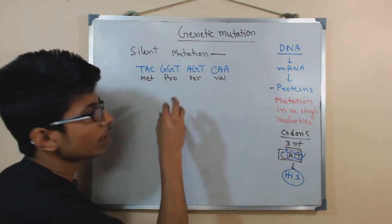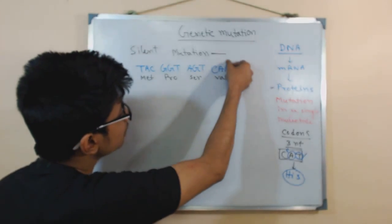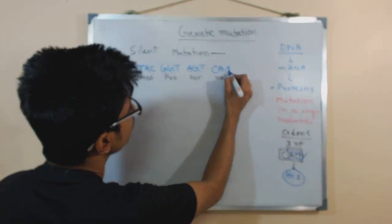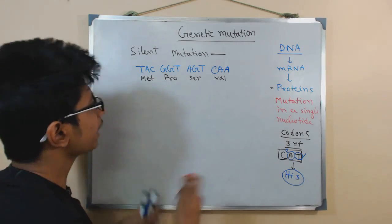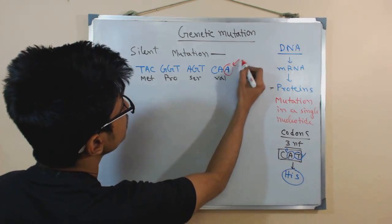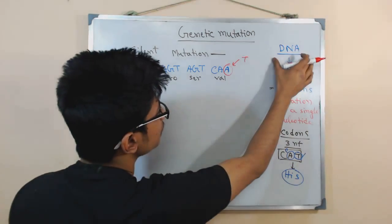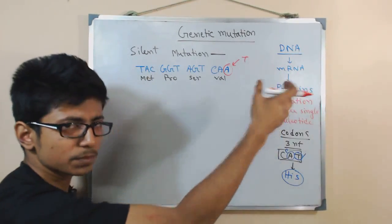Now, let us imagine there is any kind of problem with this third codon here. Instead of A, actually we put here, instead of A, there is mistakenly a T inserted